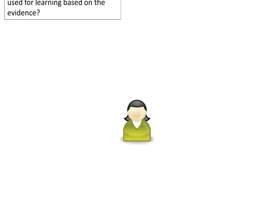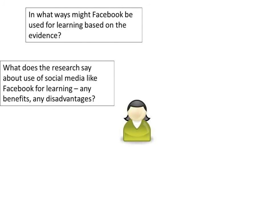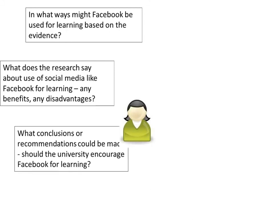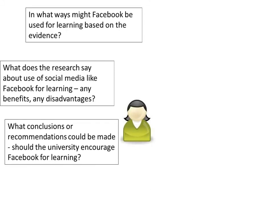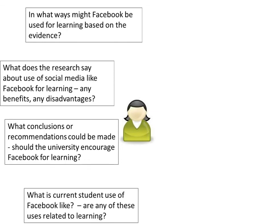Once Amy has identified her audience and purpose, she starts to break down the brief into some sub-questions that her audience would want answered in the report in order to meet the report's purpose. For example, they might be interested in what ways Facebook could be used for learning based on the evidence Amy gathers. They'd also be interested in what the background research says about the use of social media for learning – are there any benefits or disadvantages? They definitely want to know what conclusions or recommendations could be made based on the evidence. And they'd be interested in current student use of Facebook and whether any of these uses are already related to learning.